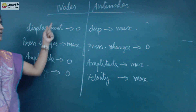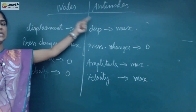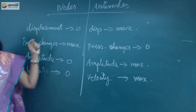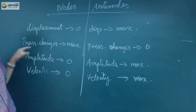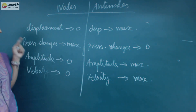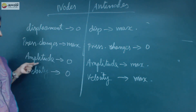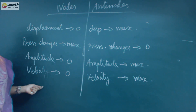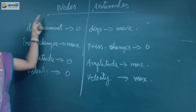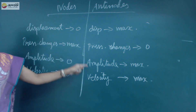These are the major differences between nodes and anti-nodes in stationary waves. So, how do you see the displacement, pressure changes, amplitude, and velocity? These are the key characteristics of a stationary wave.